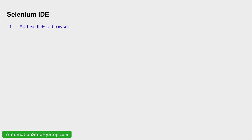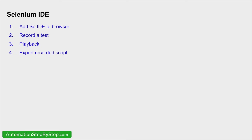We are going to see how to add Selenium IDE to our browser. We will learn how to record a test and how to play back the test. We will also see how we can export the recorded script for our programming languages — for example, if you are using Selenium Python, you will have the option to export in Selenium Python, then Java, C#, etc. You will see some features and options, and we will also see what the command line runner of Selenium IDE is.